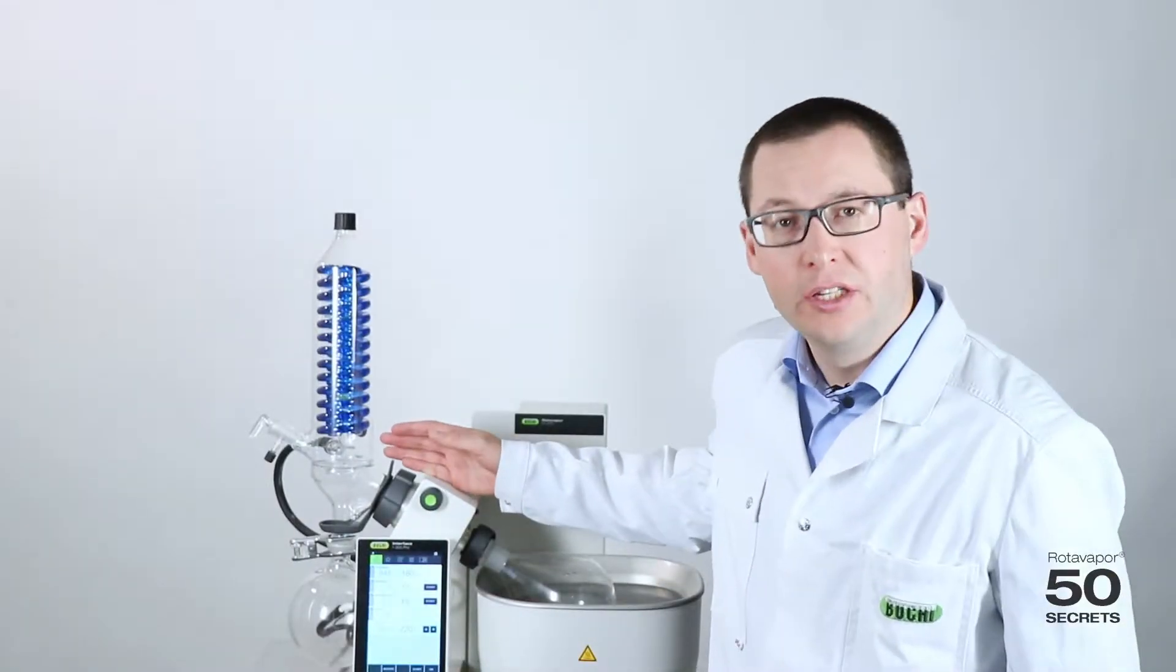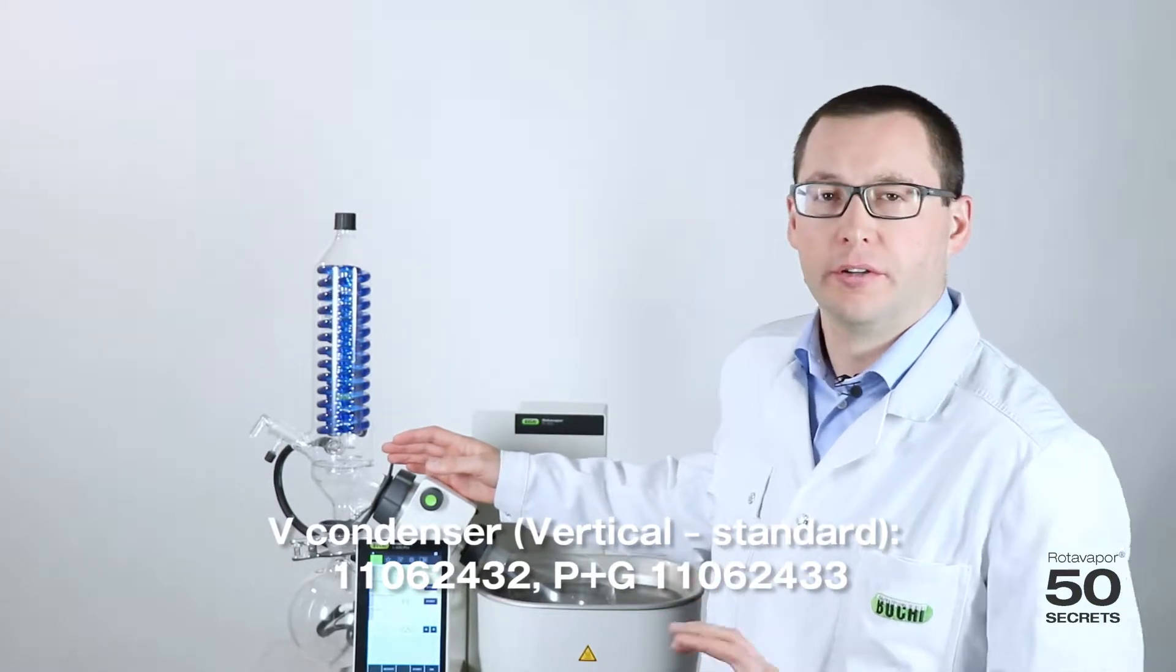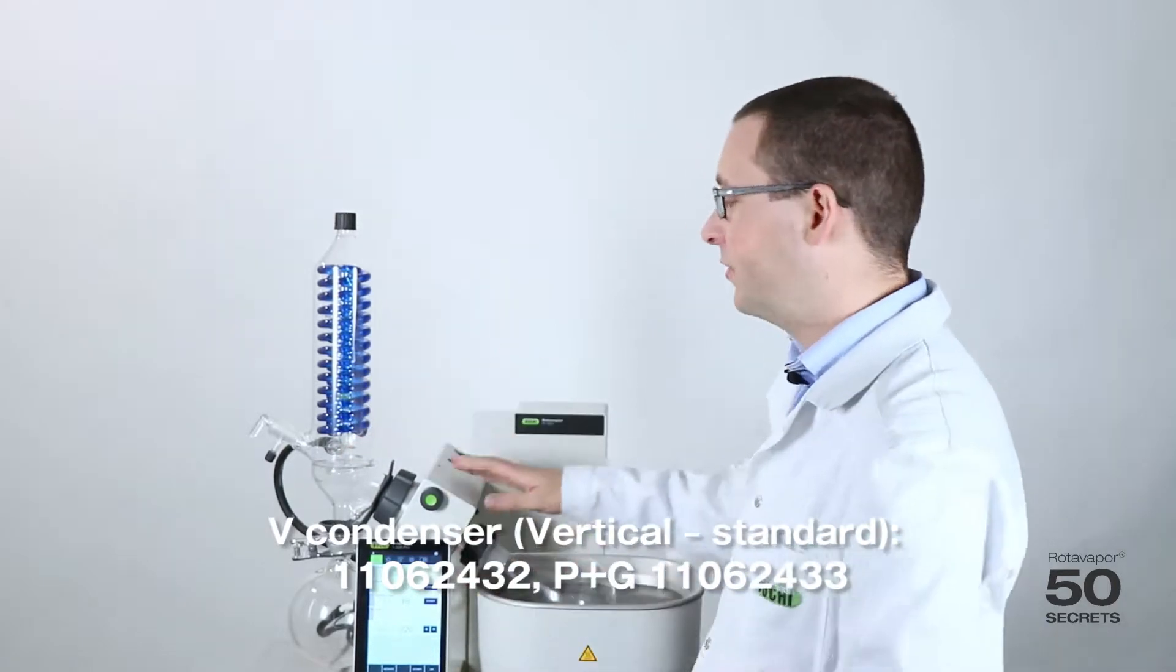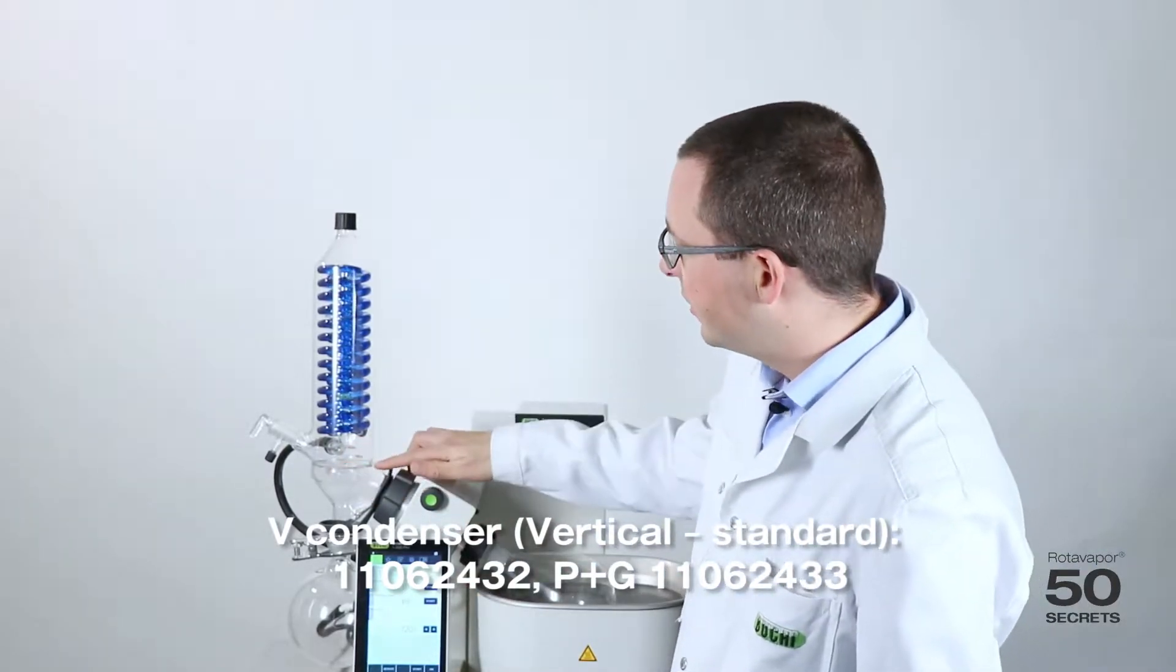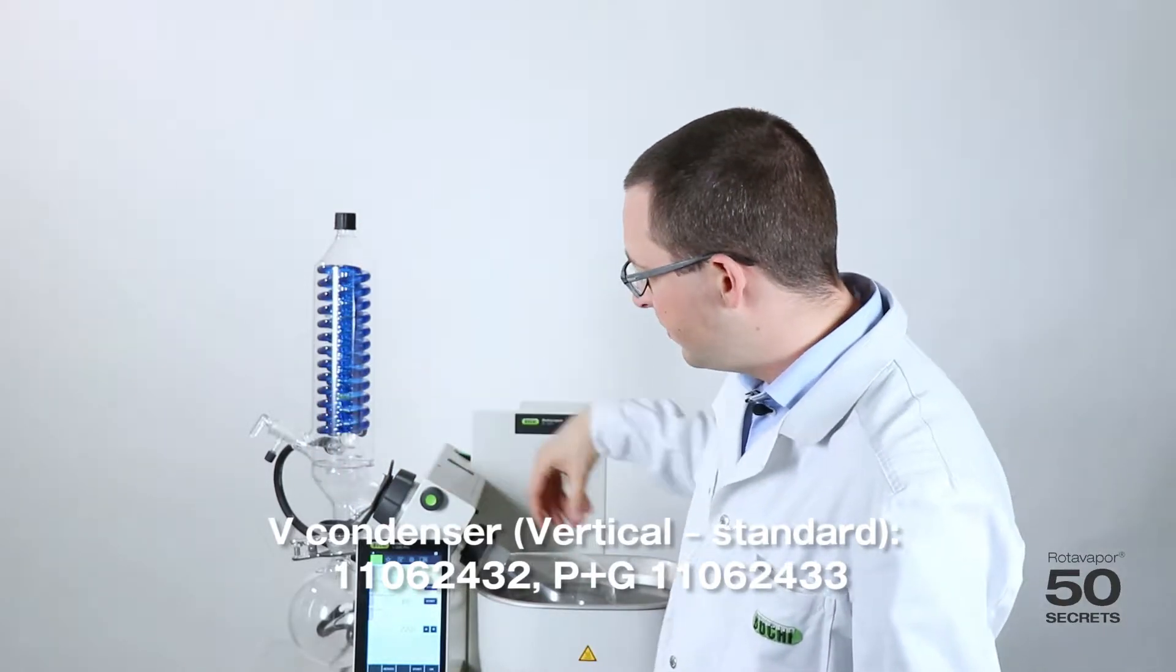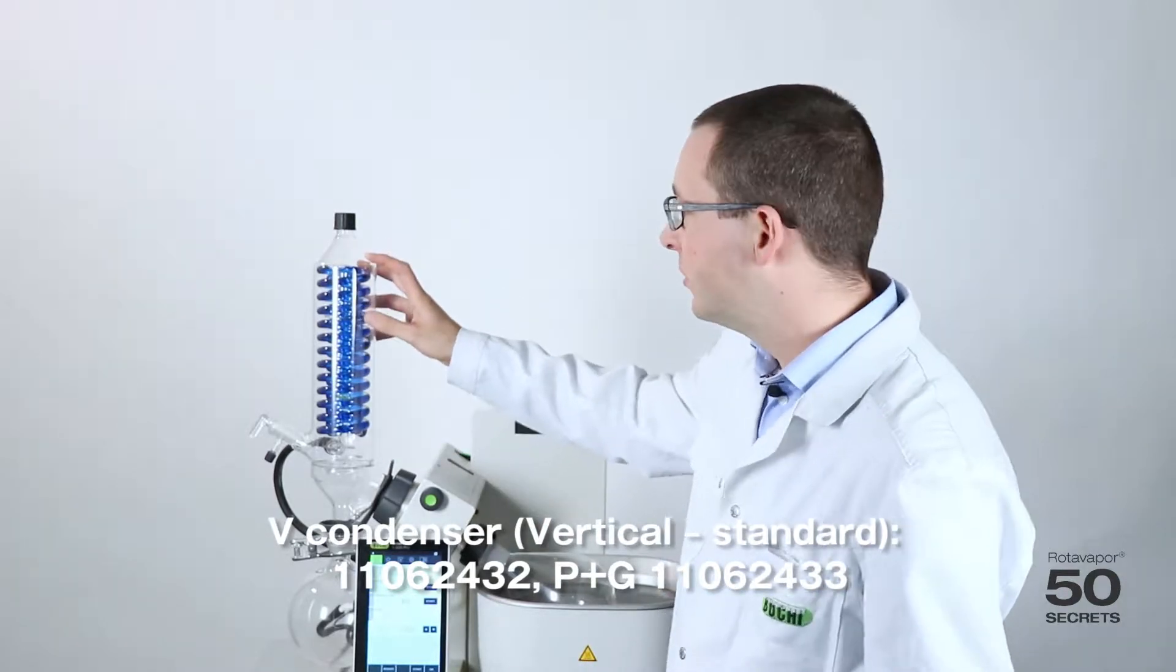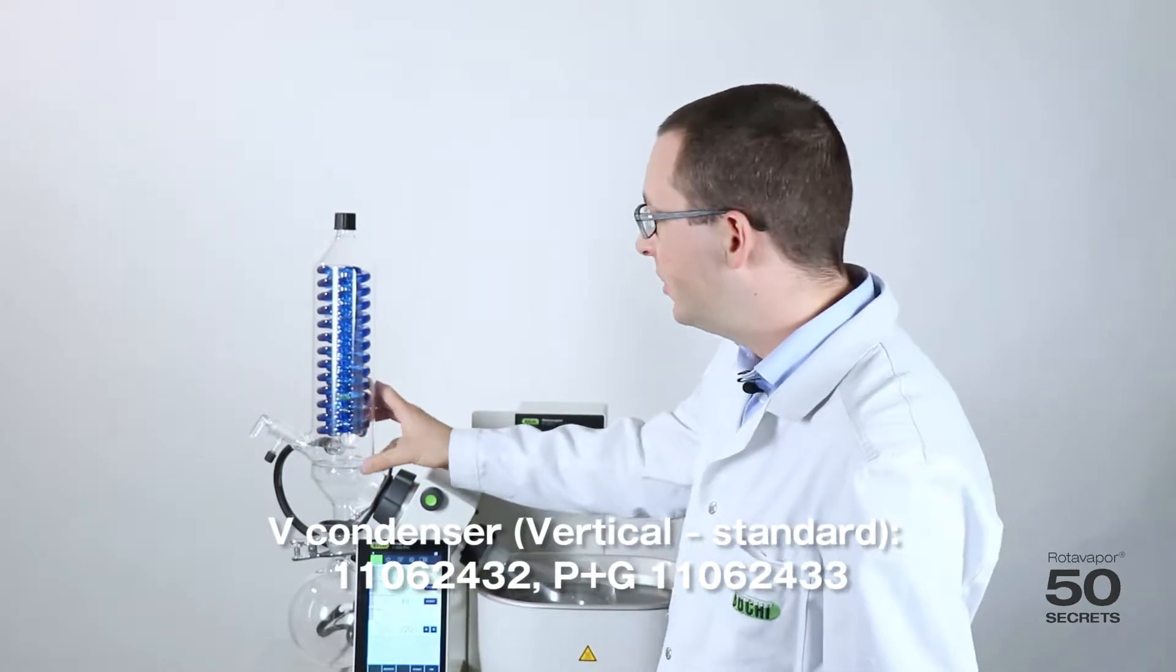This is the standard V condenser. The V condenser we sell by far the most. It's the high-end condenser used for the R300 models. It consists of this plate over here which prevents solvent flowing back into the vapor duct. It has this middle finger where we take the vacuum. So all in all this is 1500 square centimeters.